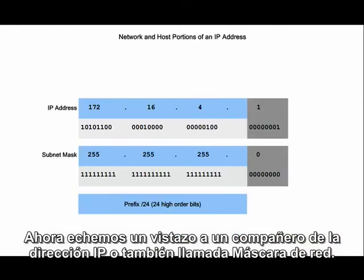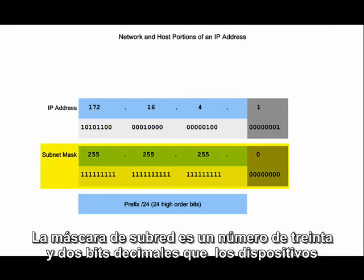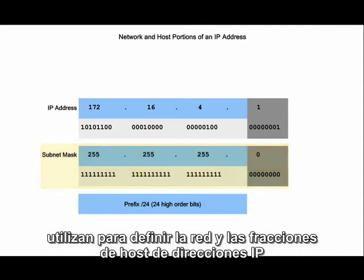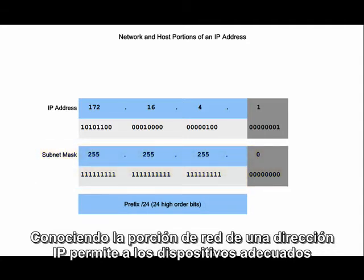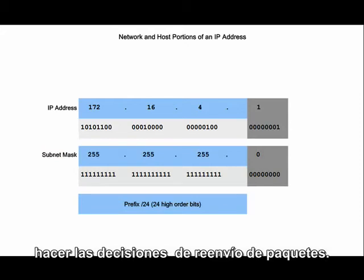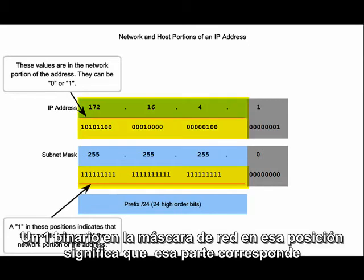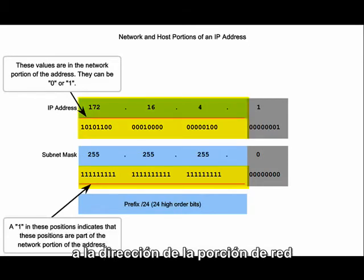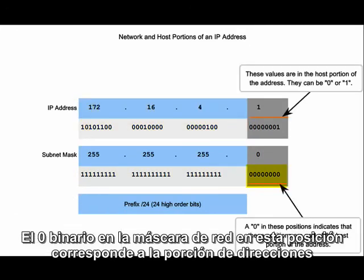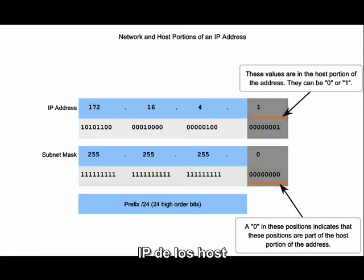Now let's look at a companion to the IP address called the subnet mask. The subnet mask is a 32-bit dotted decimal number that devices use to define the network and host portions of an IP address. Knowing the network portion of an IP address enables devices to make proper packet forwarding decisions. A binary 1 in the subnet mask means the corresponding bit position in an IP address is part of the network portion, and a binary 0 means it is part of the host portion.